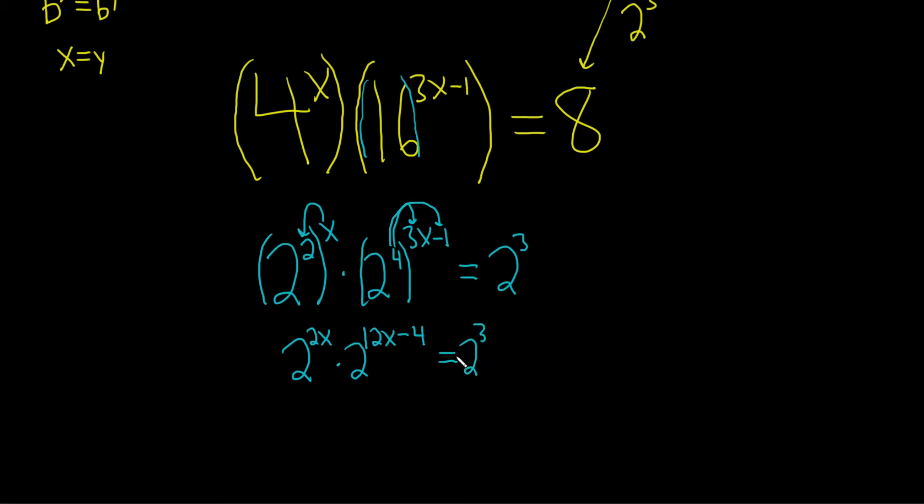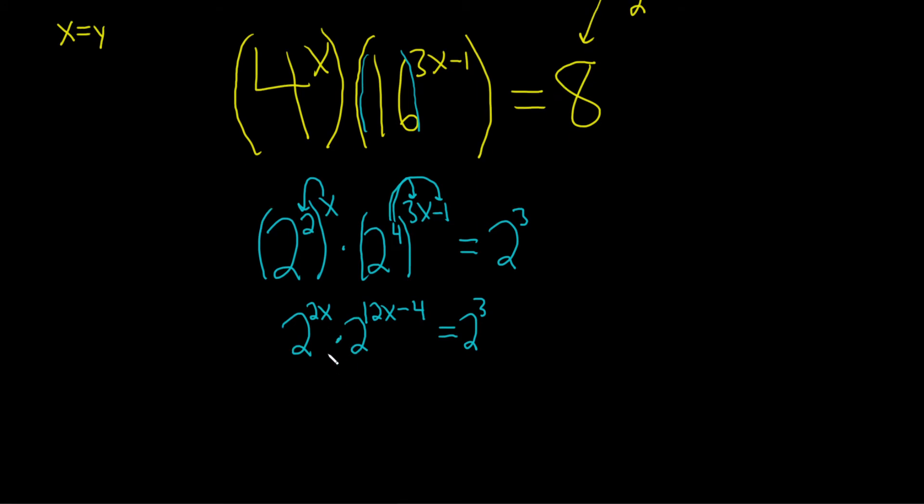Okay, now on the left-hand side, we can add, because we're multiplying things with like bases, so we add the exponents. This will be 2. So let's see, 2x plus 12x is 14x. And then we just have the minus 4 here. And this is equal to 2 cubed.